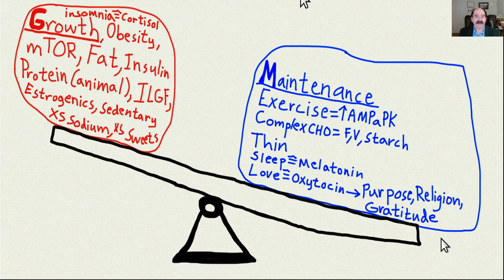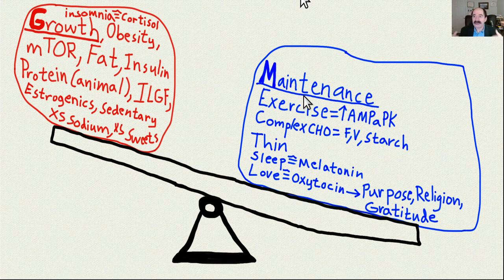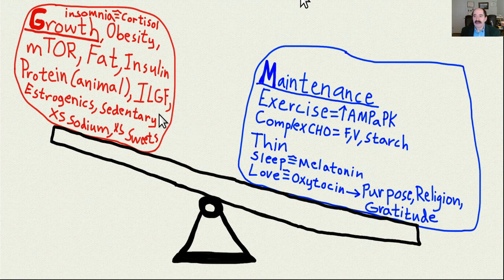This slide here is a summary. Basically, what you want once you're an adult is to stay in maintenance, especially once you're middle-aged and older. Maintenance means you keep yourself healthy, but you don't want abnormal cell proliferation. One reason is what's called the Hayflick limit — if you accelerate the rate at which cells divide, it means you die sooner.